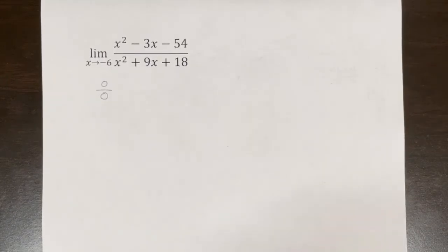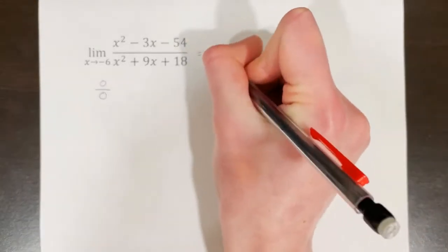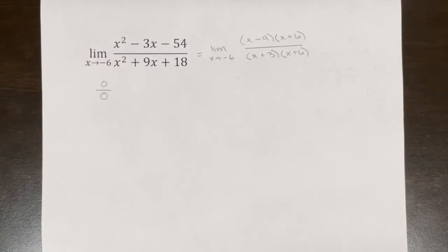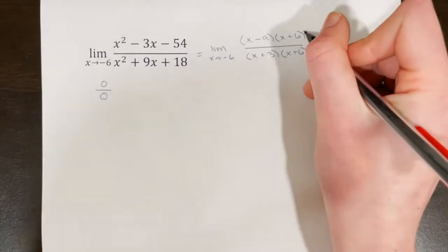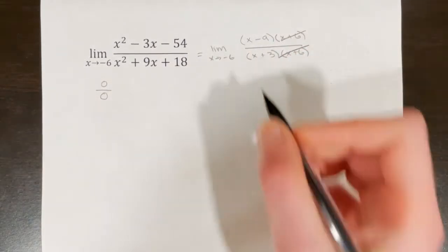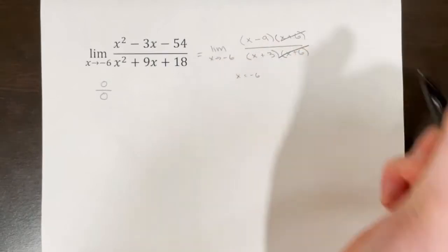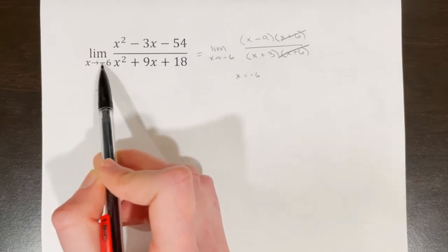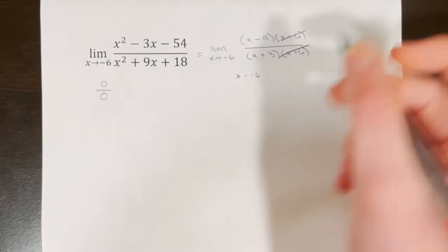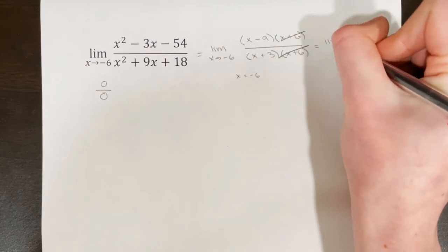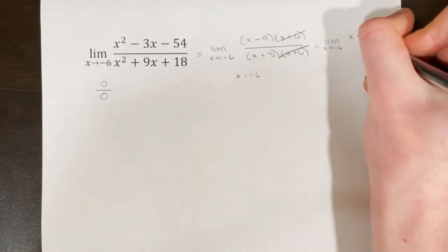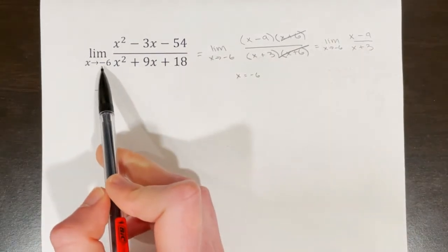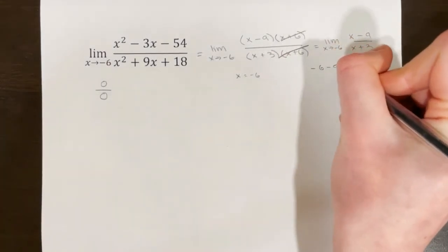Let's go back to our original example and try factoring. It looks like we have a common factor in the numerator and the denominator, so we can cancel out x plus 6. This means there is a hole at x equals negative 6 — that's why we were getting indeterminate form when we tried to directly plug in negative 6 without reducing first. Once reduced, we get the limit as x approaches negative 6 of x minus 9 over x plus 3.